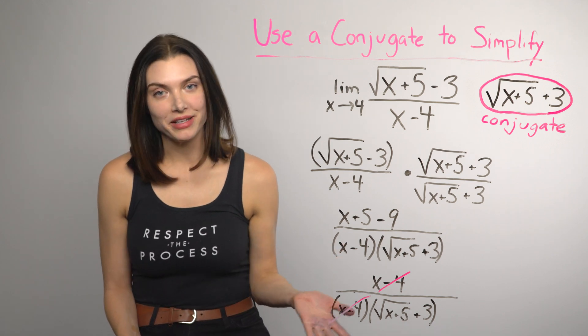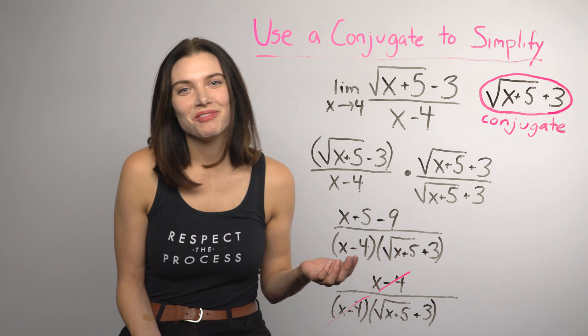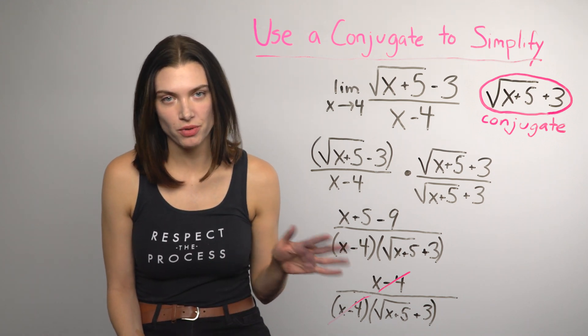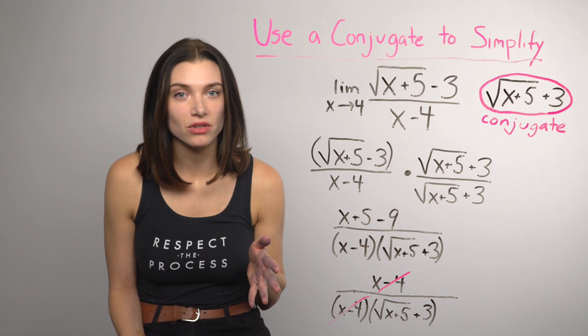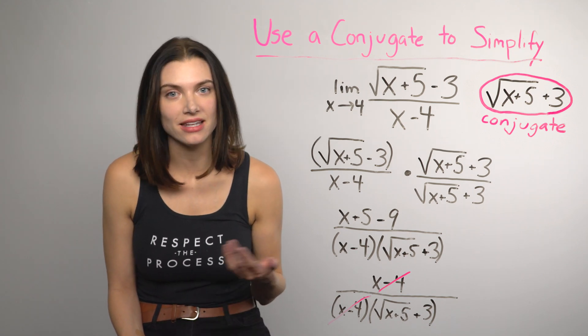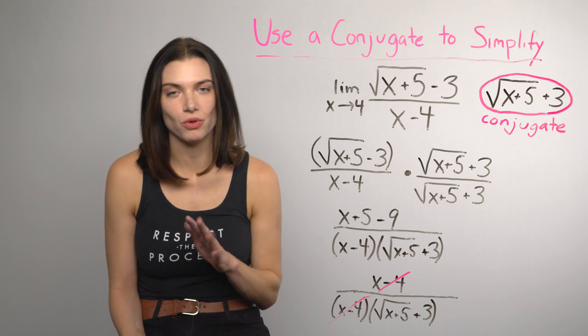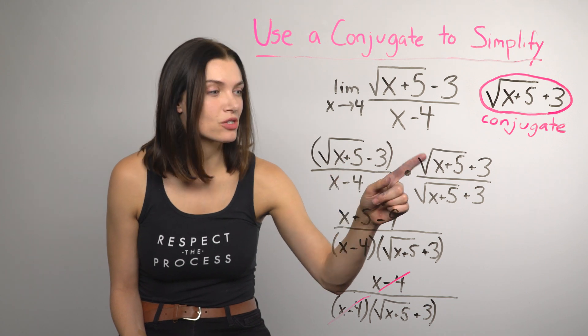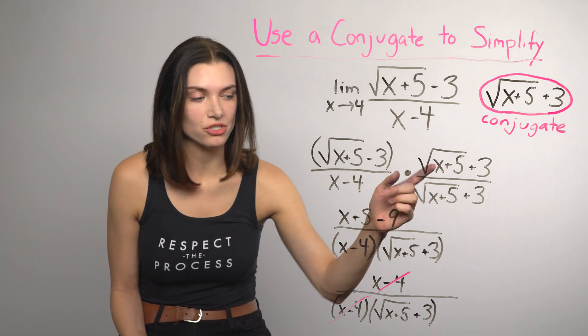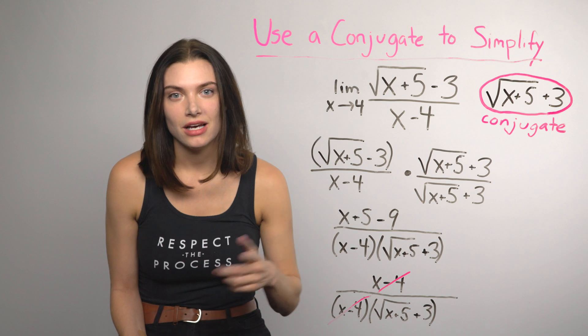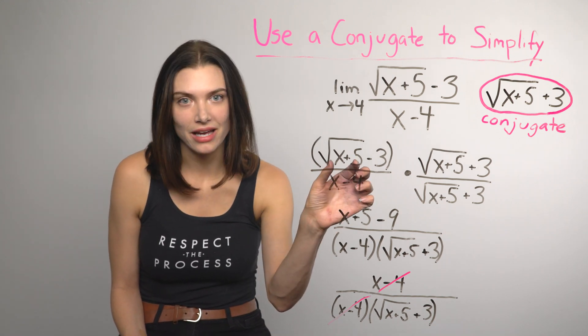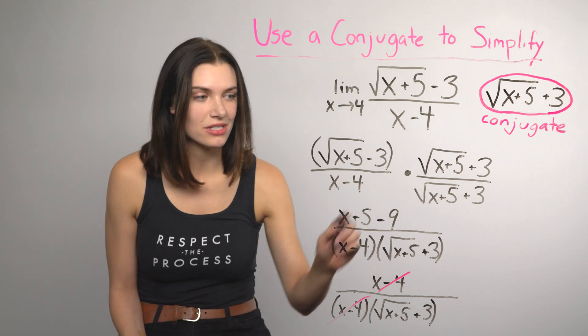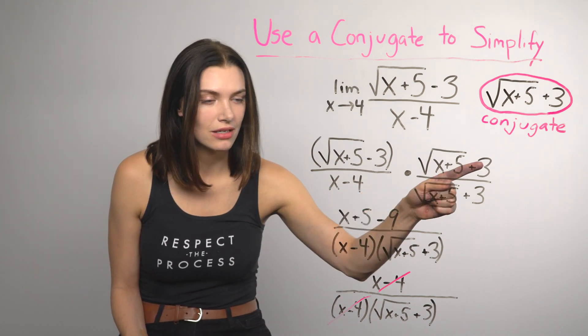You probably remember foiling, and maybe it's not even a painful memory. Foiling is multiplying the first, outer, inner, last. Here's a pro tip. When using the foil method with conjugates, you only have to worry about the first and the last because the middle two terms will always cancel out. The first term is the square root of x plus 5 times the square root of x plus 5, which is just x plus 5. A square root multiplied by itself always ends up being the radicand, which is just everything under the radical sign. The last term is just negative 3 times 3 equals negative 9.